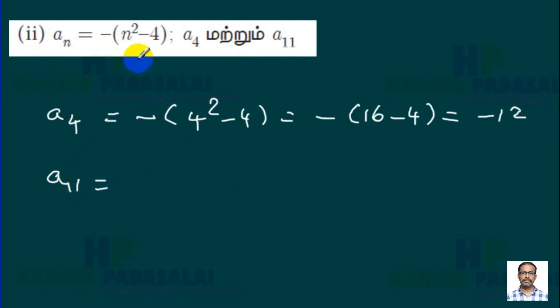For a₁₁, we substitute n=11: a₁₁ = -(11²-4). This gives us -(121-4) = -117. So a₁₁ = -117.